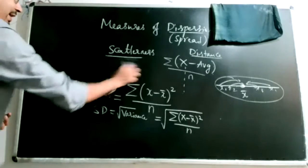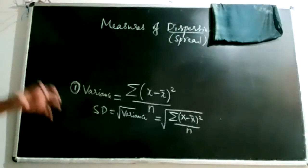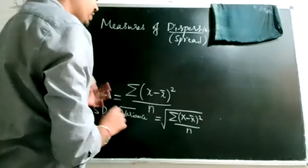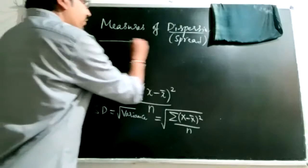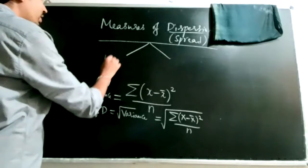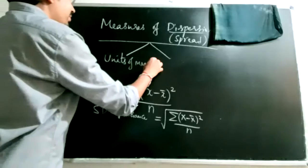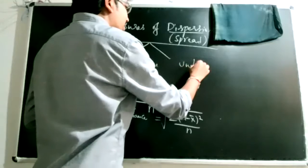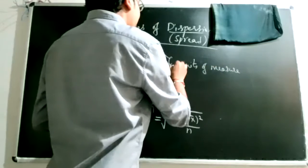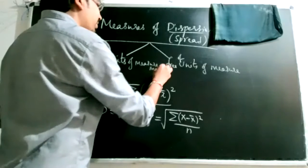This measure captures how far or how close x-bar is with respect to the observations. These measures can be roughly categorized into two cases: one where the measure is expressed in terms of the units of measurement of the variable, and another where, if you want to compare measures across different distributions, you need measures that are free of units of measurement.